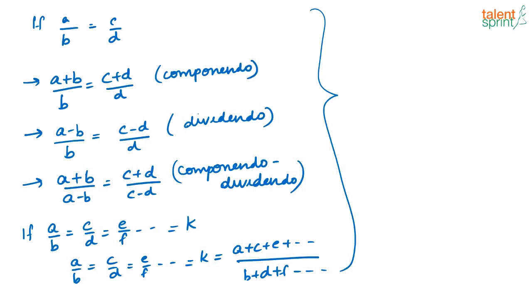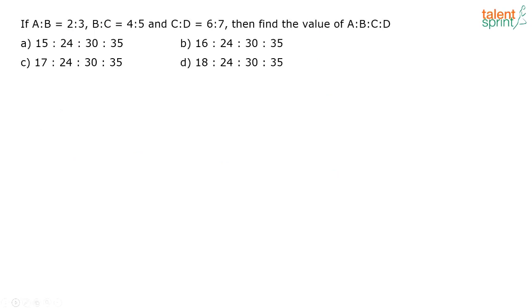Before going into allegations and mixtures, let us discuss questions on ratios and proportions. The first question: if a is to b equals 2 is to 3, b is to c equals 4 is to 5, and c is to d equals 6 is to 7, then the value of a is to b is to c is to d is what? Whenever you are asked to combine ratios, look at the common term in both ratios.